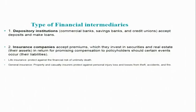Let us now move to the third aspect: types of financial intermediaries. We can understand these by going through the various types, starting with depository institutions. Depository institutions include mainly commercial banks, savings banks, and credit unions, which accept deposits and make loans. They are also called banking institutions — the terms are used interchangeably.